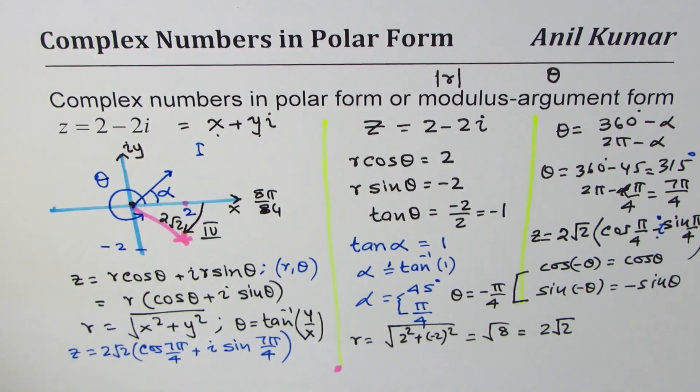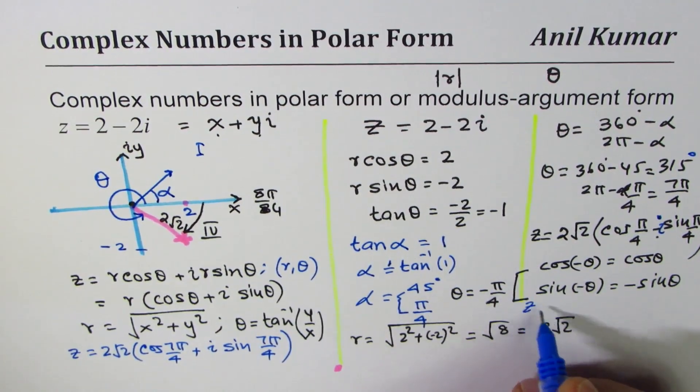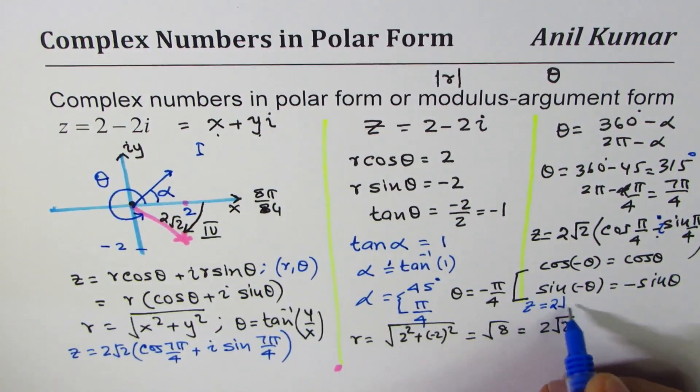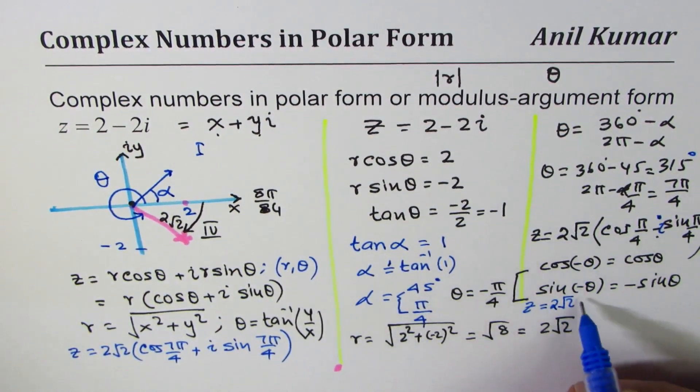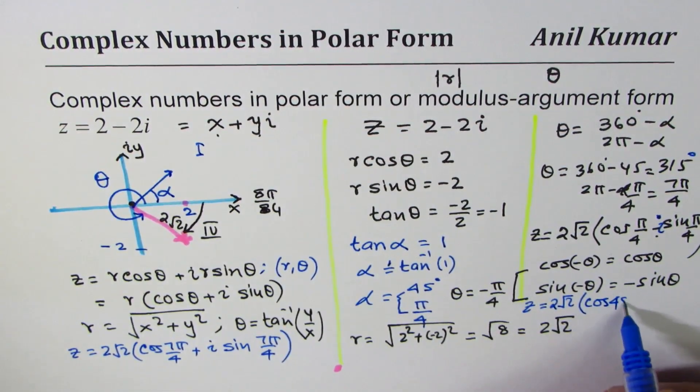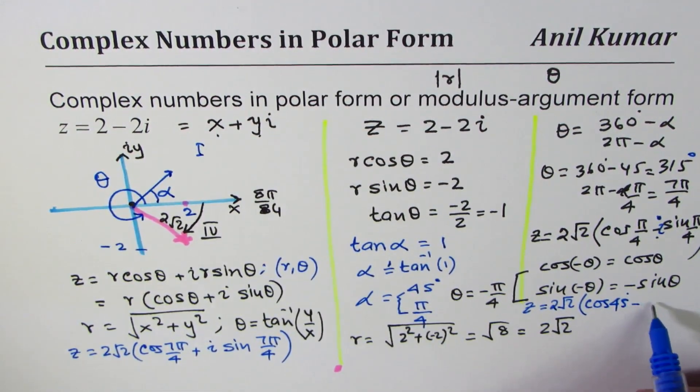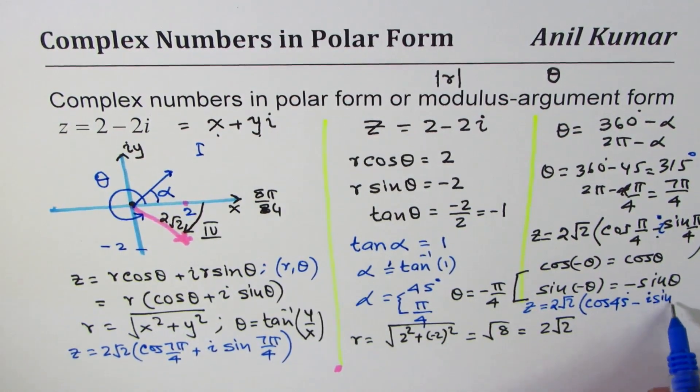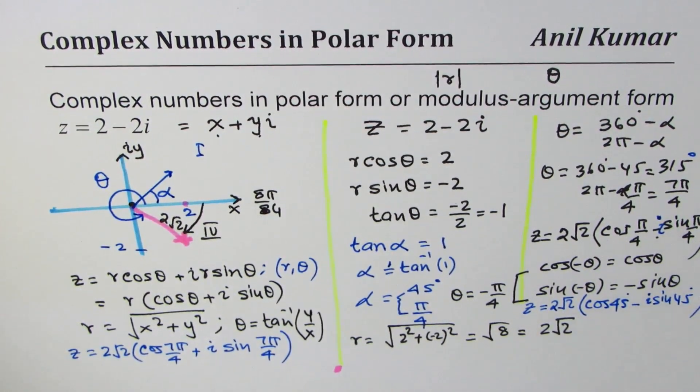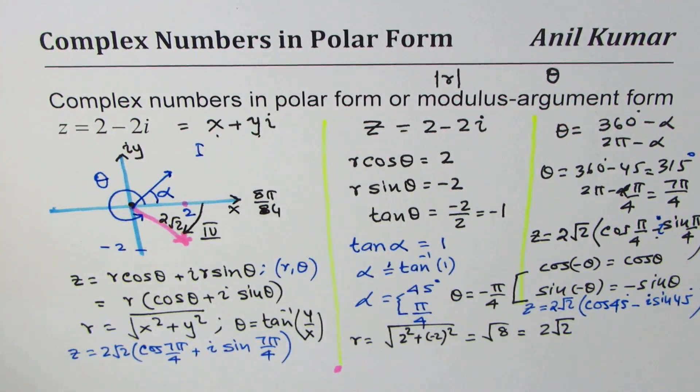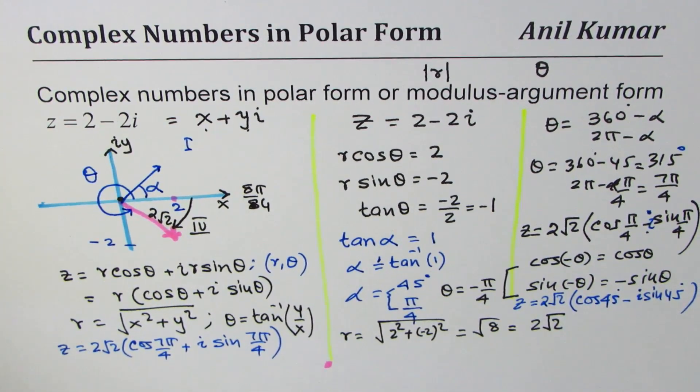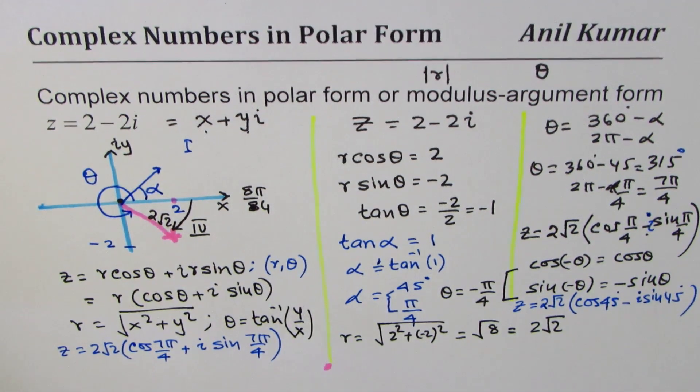Or if you choose this option pi by 4 is 45 degrees to write down your answer. So let me write down here another answer: z equals 2 square root 2, this is always positive, cos of 45 degrees minus i sine 45 degrees. So three, four ways of writing it. I hope you're not confused but you appreciate what I've done. Feel free to make suggestions. Thank you and all the best.